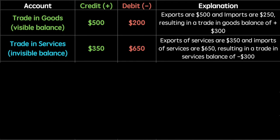The invisible balance is the balance of the trade in services. This includes all services that are exported from and imported to a country. A great example of this is tourism — when tourists visit our country, they bring money earned from their country to ours to consume our services. The invisible balance is calculated by subtracting imports from exports, resulting in an invisible balance of minus $300.